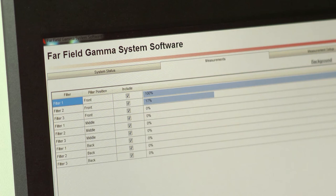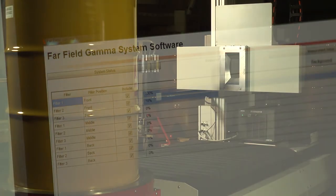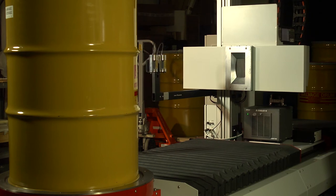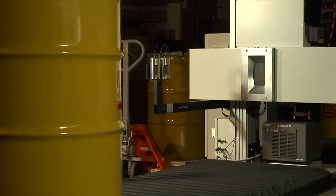This includes the use of filters or the movement of the detector away from the drum, to reduce the count rate in the detector and hence the detector dead time.